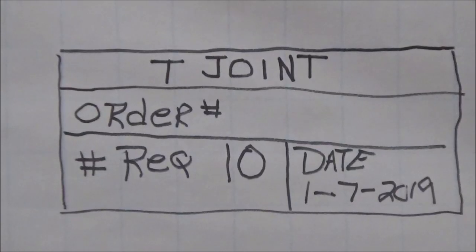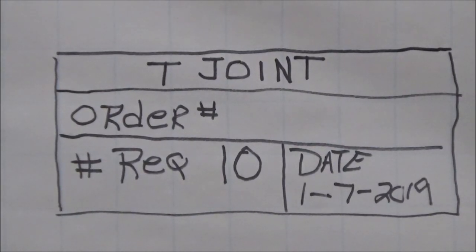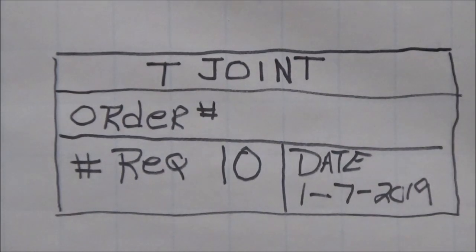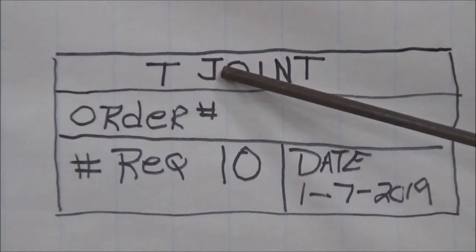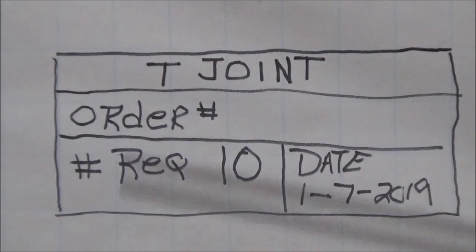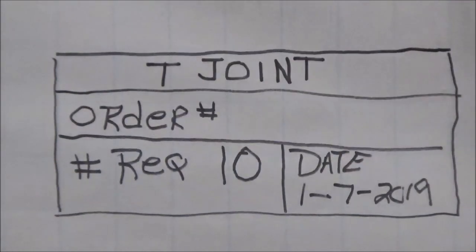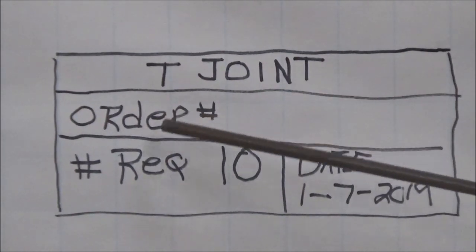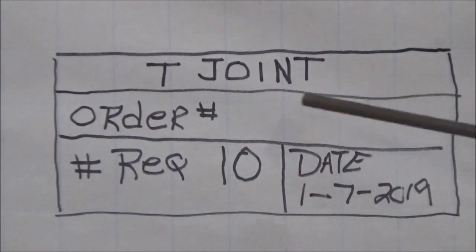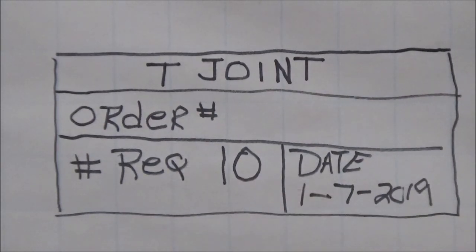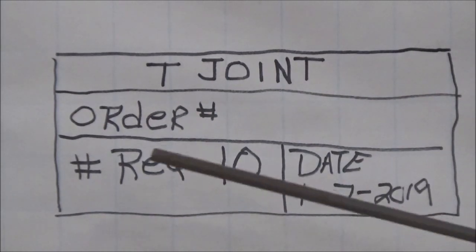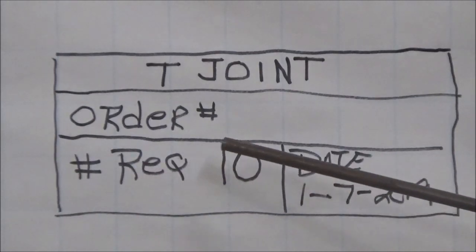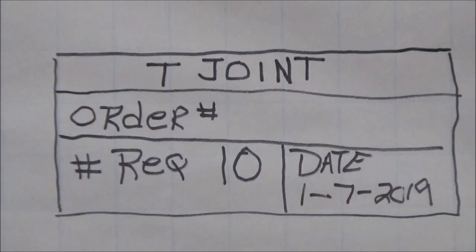Alright, ladies and gentlemen, if you remember from our previous videos on blueprint reading, we talked about a title block. And this title block is the first place we're going to go looking for our bill of materials. Number one, we're going to identify this as a T-joint. So we know that this is the only thing that we're working with right now, this particular part. And that's called a T-joint. The order number would be in here, whatever you desire. But here's the part that we're talking about. The number required, 10.